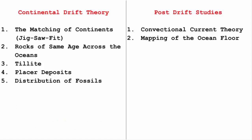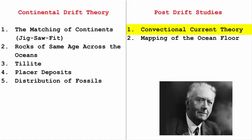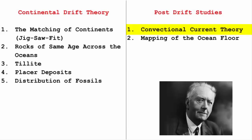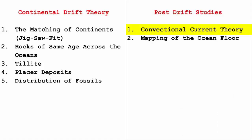In the post-drift studies, scientists felt: why not do a comprehensive study by mapping the ocean floor? That led to the convection current theory, where Arthur Holmes said it is because of the magma present in the mantle which is causing the ocean floor to expand. Since the oceanic crust is thinner than the continental crust, it is easy for magma to come out from the ocean bed, and that's why mid-oceanic ridges give solid proof about this theory.